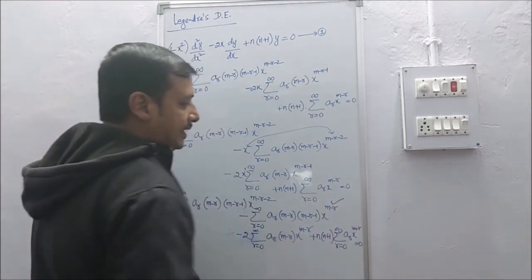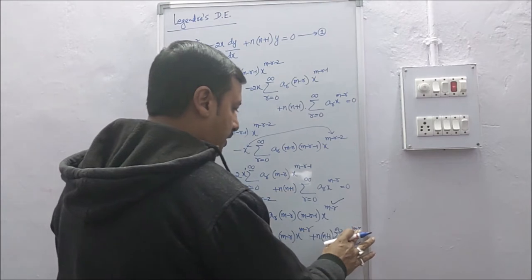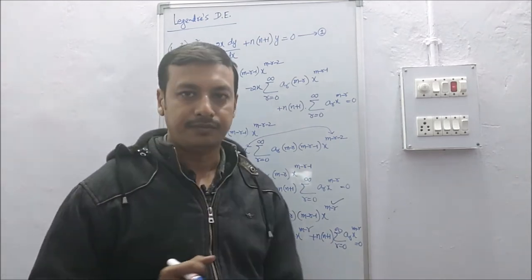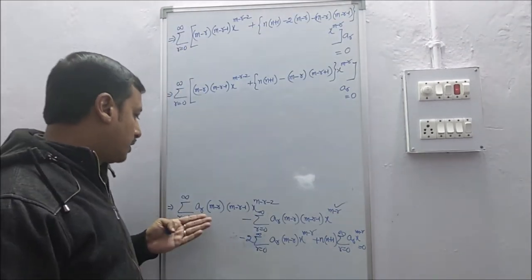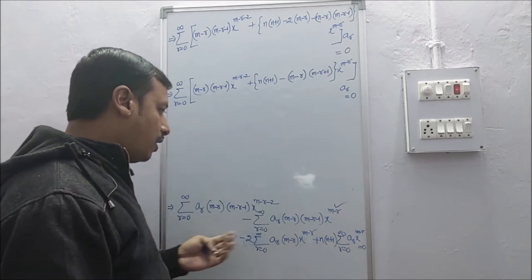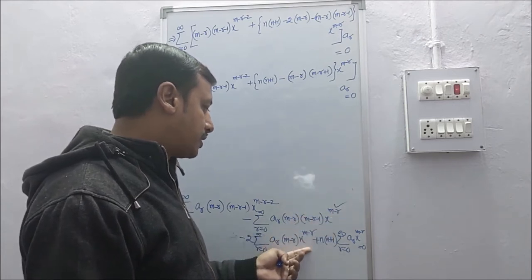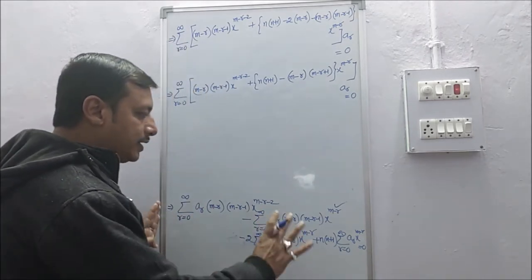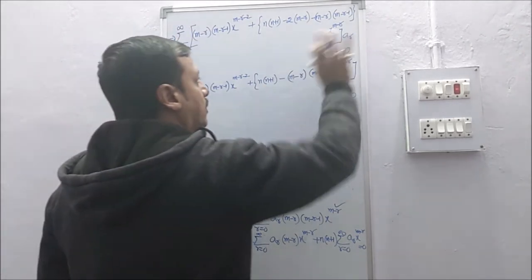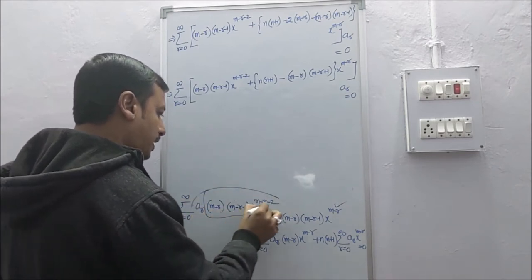We identify two types of terms: one with x to the power (m−r−2) and three terms with x to the power (m−r). The first summation involves a_r(m−r)(m−r−1)x^(m−r−2). The remaining three terms with x^(m−r) share a common factor of a_r and can be grouped together.